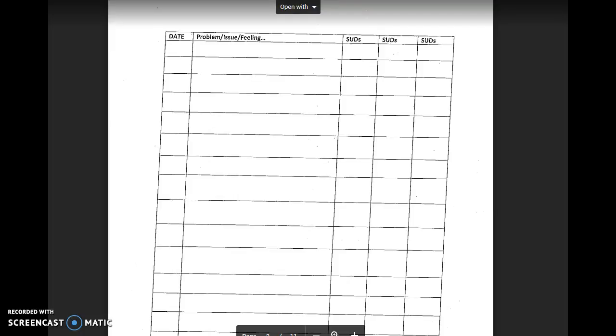You want to have some kind of chart to write the date, the problem or the emotion or the issue you're tapping on, and the measurement of how bad it feels before, during, and after. So your SUDS rated one to ten, how bad.